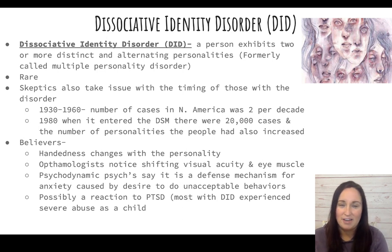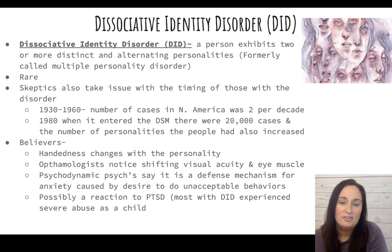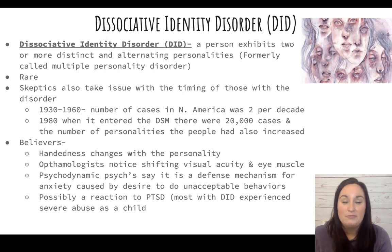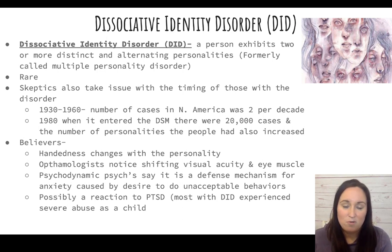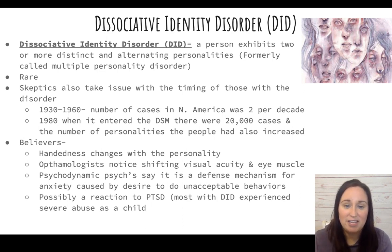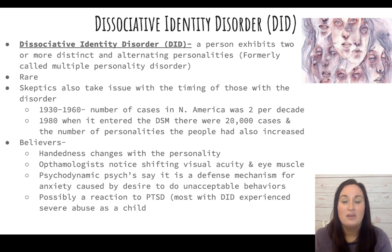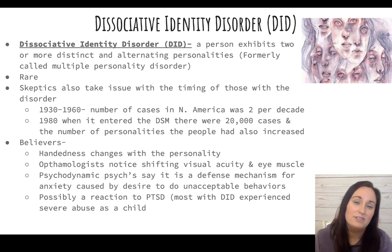Skeptics point out that from 1930 to 1960 there were only two cases per decade, but when DID was added to the DSM in 1980, there were 20,000 cases, and the number of reported personalities also increased from around three to seven or eight.